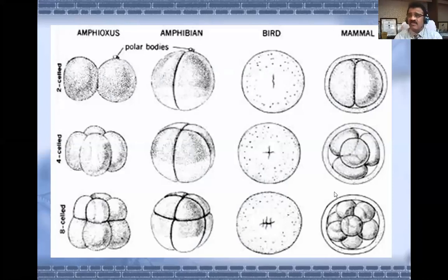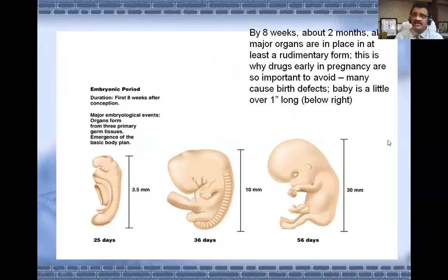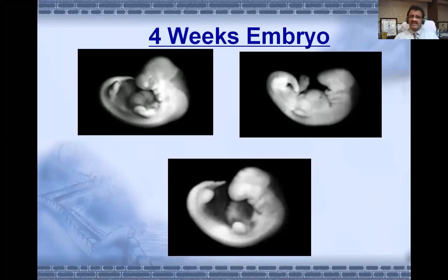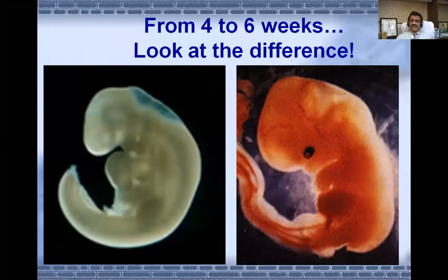In the first trimester, cleavage takes place and by eight weeks all major organs are formed. At 25 days the embryo is 3.5 mm; at 36 days, 10 mm; by the end of the second month, 30 mm. Here are pictures showing a four-week embryo versus a six-week embryo — you can see how things change day by day, week by week. A 29-day embryo is shown — one day less than one month — which is when the heart starts pumping.